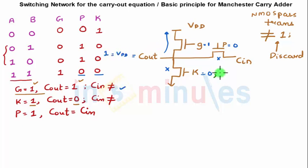Suppose my K is one, that means again my P is zero and my G is zero. See this case. So this is off, this is off, and because this transistor is on, this will pull my output towards ground. So C out will be equal to zero, and in both these cases I am not depending on C in at all.